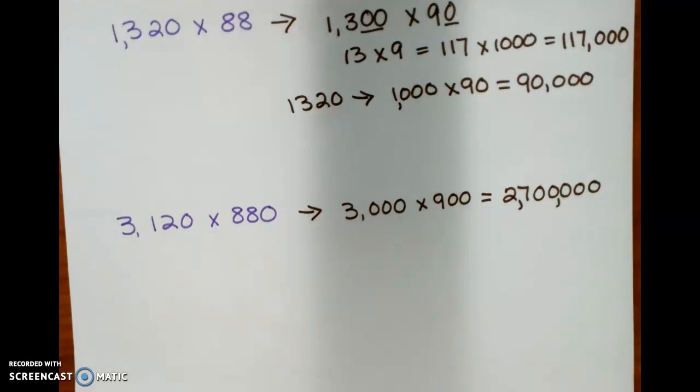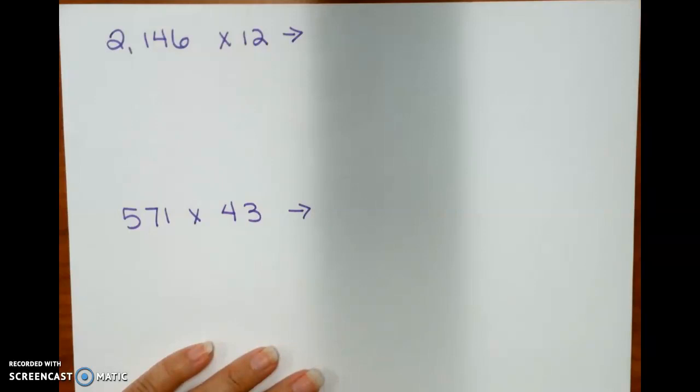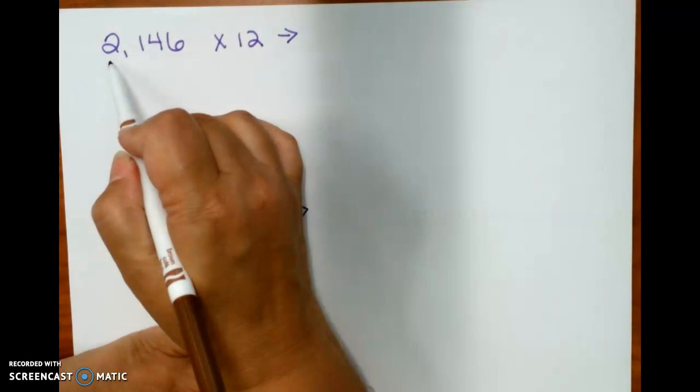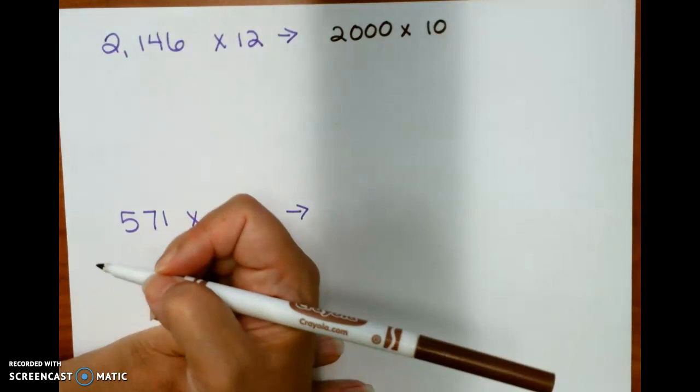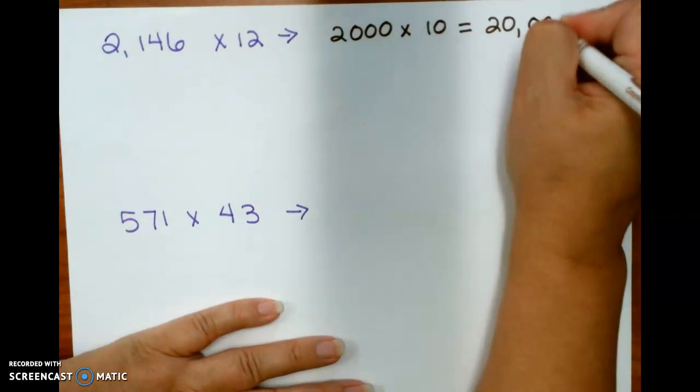Now, for 2,146 times 12, I'm going to round my first factor to 2,000 and my second factor to 10. Those are super easy. So that would give me 20,000.